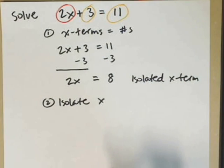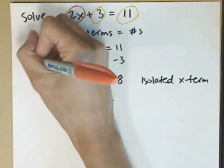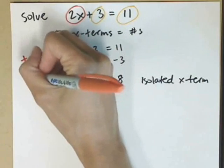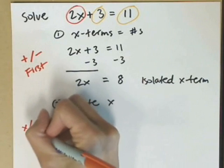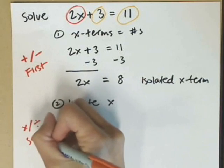As you're moving through these, you'll notice that for the most part, though as they get complicated, you might mix things up a little bit. For the most part, you're going to add or subtract first using the addition principle, and then you'll multiply or divide second.